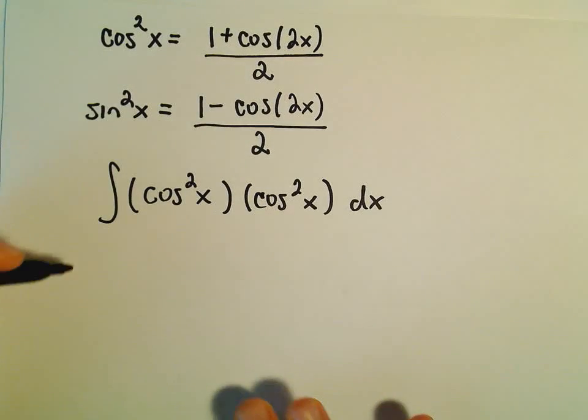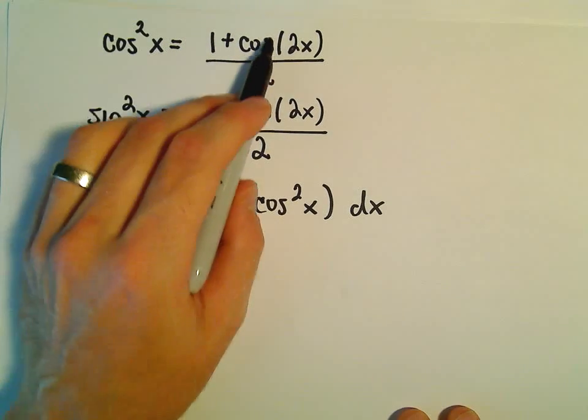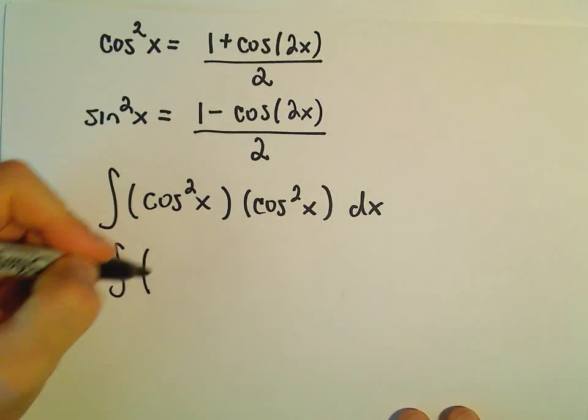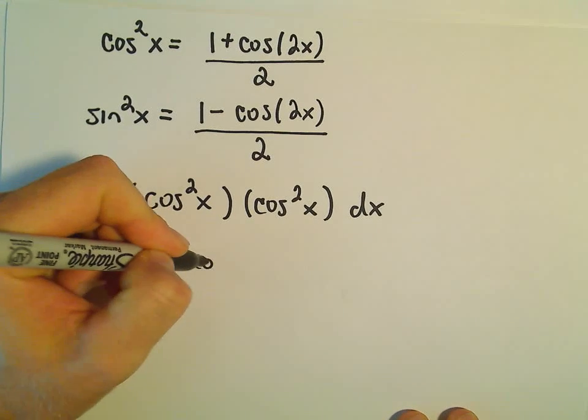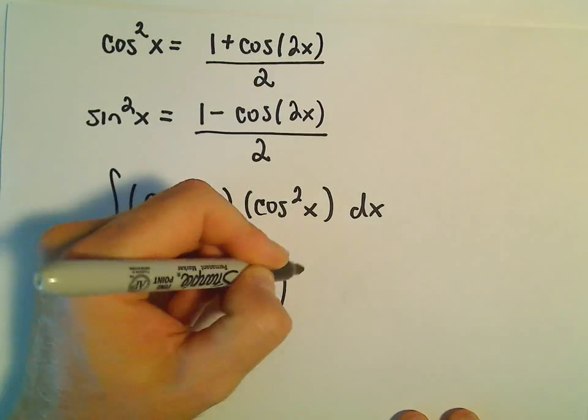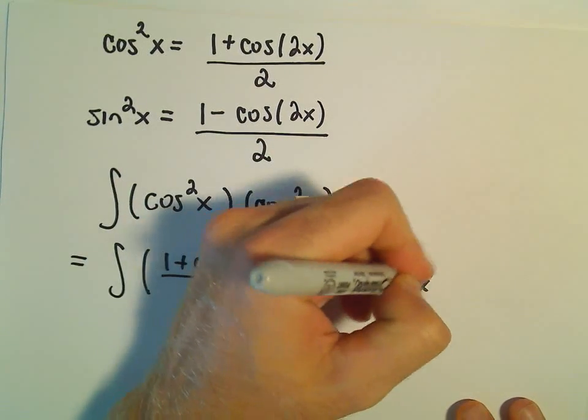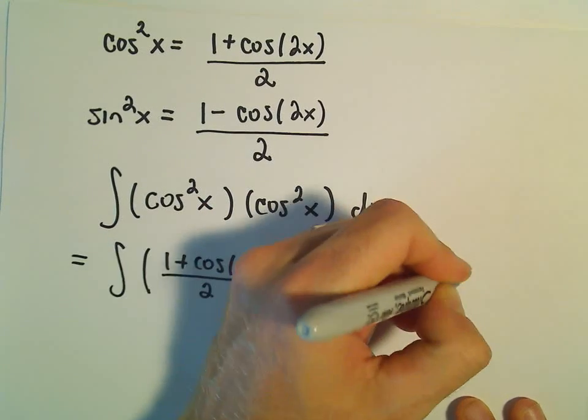So I've seen these identities called power reducing identities, right? Because you're kind of going from a cosine squared to a cosine to the 1st power. So we'll have 1 plus cosine of 2x over 2 times another 1 plus cosine of 2x over 2.